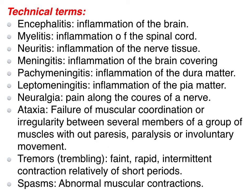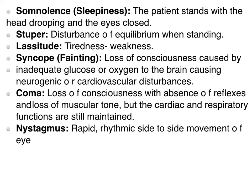Tremors refer to trembling, such as in the hand. It is an intermittent contraction of relatively short period, while spasm is abnormal muscular contraction. Another technical term is somnolence, or sleepiness, where the patient stands with head drooping and eyes closed.